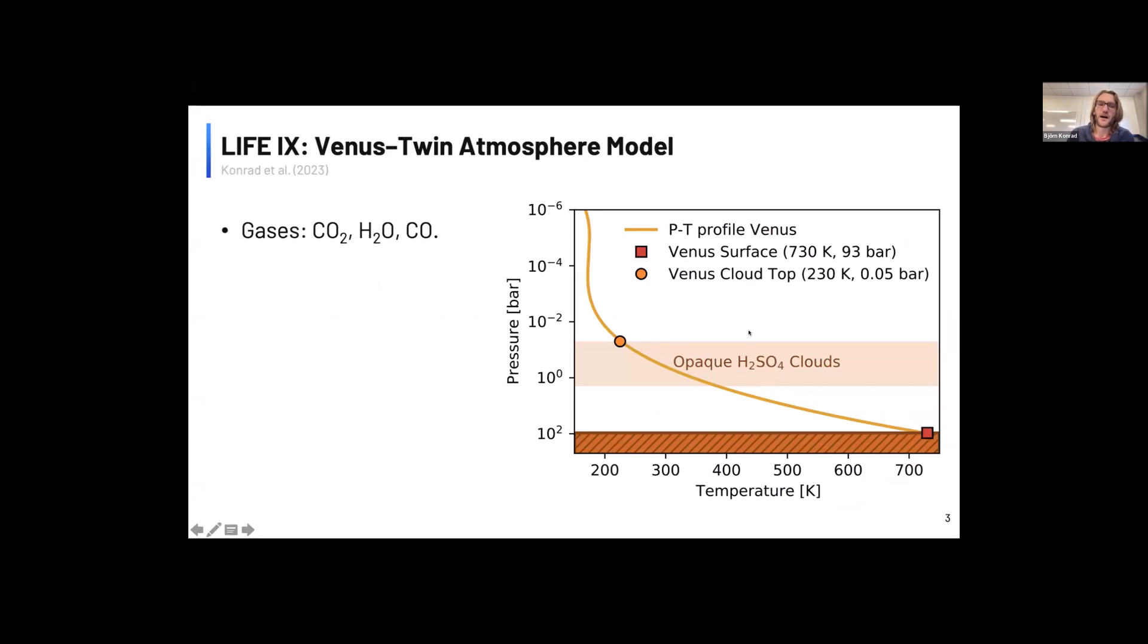And then the other thing we have in Venus's atmosphere is an opaque cloud layer, which I will briefly talk about. And then above this cloud layer, the pressure temperature profile is almost isothermal.